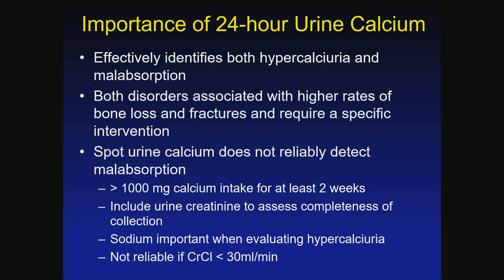Generally we suggest patients be on about 1000 mg of calcium for at least two weeks before the 24-hour urine. We include creatinine to know it's a complete collection. Sodium is important — if we get someone with really high 24-hour urine calcium, we first ask: are they on a high-salt or high-protein diet? When we excrete salt in the urine, we pull calcium with it. Loop diuretics like Lasix will also pull calcium out. It's not reliable if creatinine clearance is less than 30.